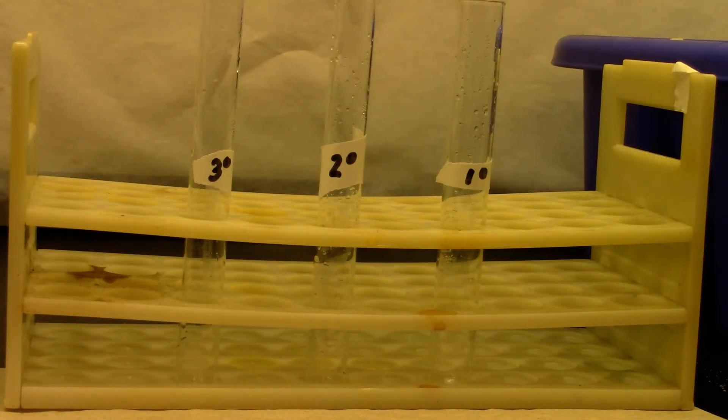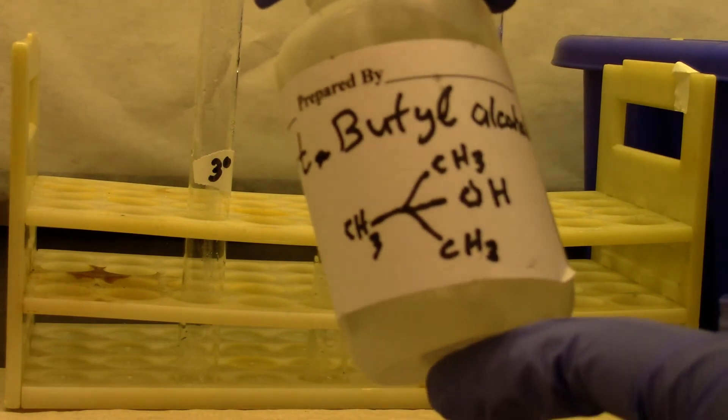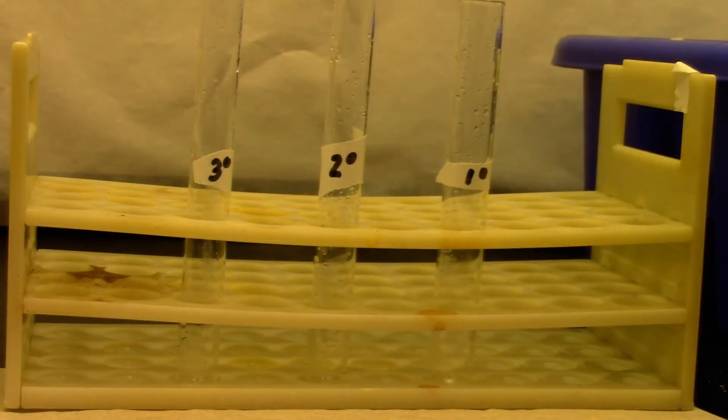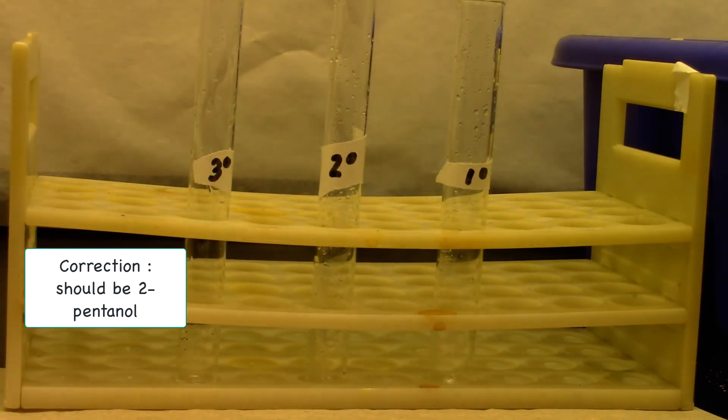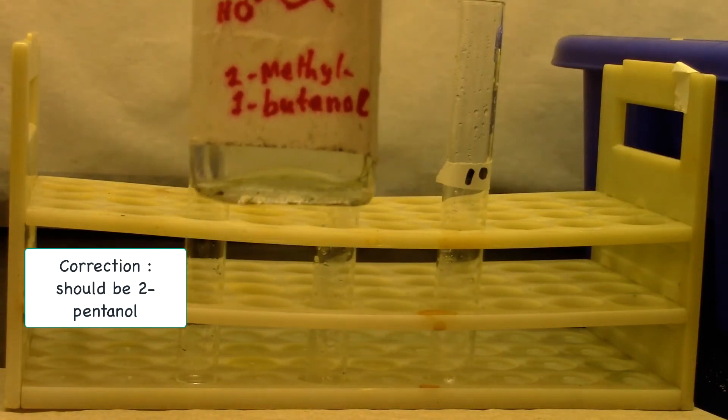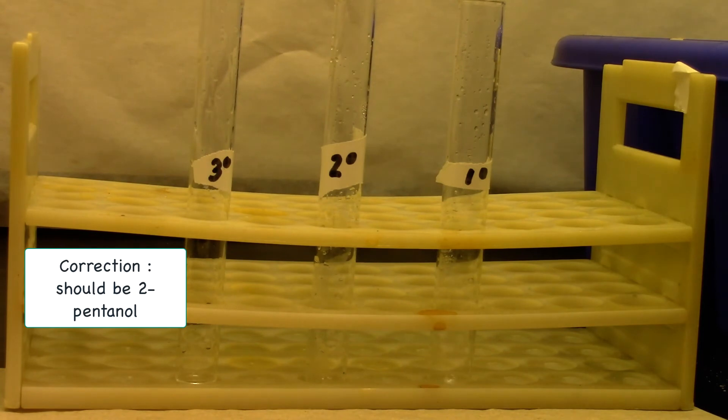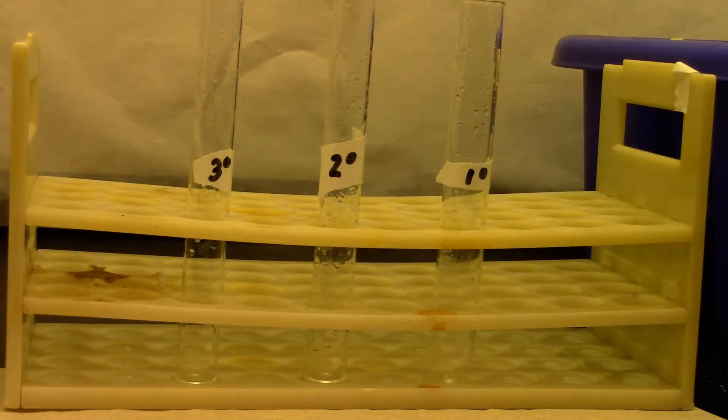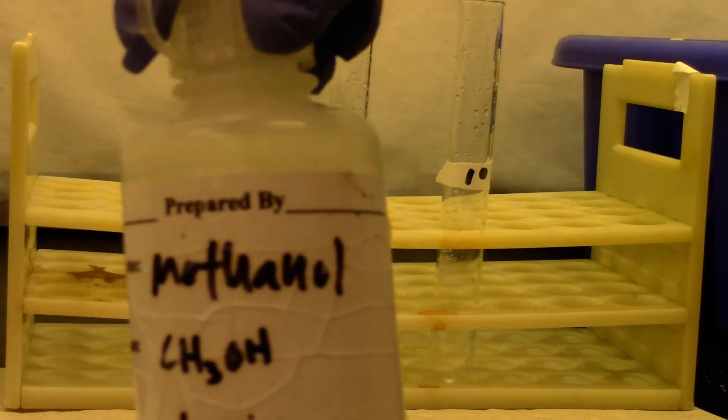We will be doing Lucas test for alcohol. That's my tertiary alcohol, which is tertiary butyl alcohol. That is my secondary alcohol, which is 2-methyl-1-butanol. And methanol is my primary alcohol.